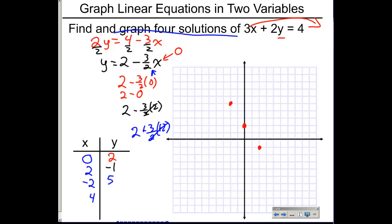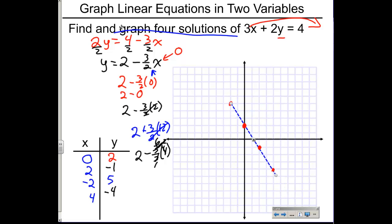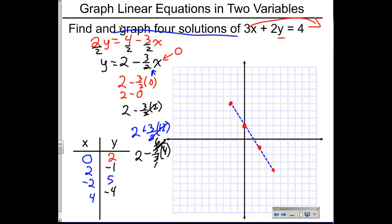For x equals four: the two simplifies to one and the four simplifies to two, so we have two minus three times two, which is two minus six, giving y equals negative four. That point is (4, -4). If I take a line and rotate it to connect the endpoints, you'll notice that all four dots are on that same straight line. That's going to be key in the future.